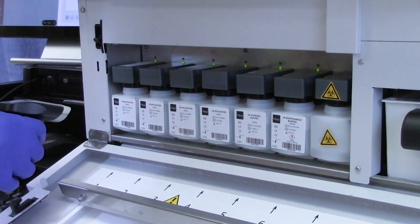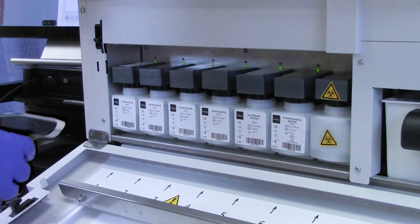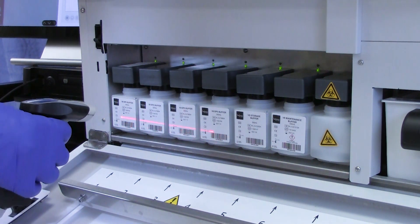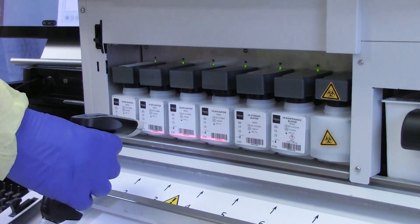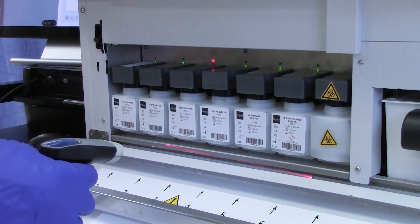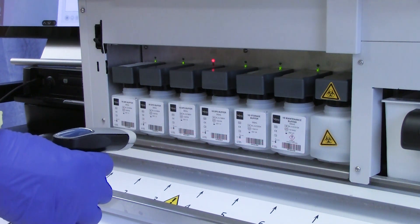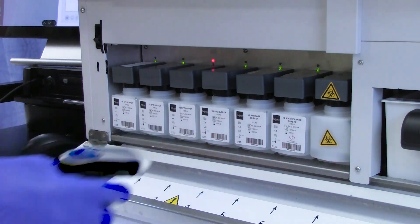All reagents and buffers for the Nexus are barcoded with lot information, expiration, and test capacities. The Nexus has six buffer positions. Two buffer positions are used for maintenance solutions. When one bottle is spent, the Nexus will automatically switch to the next bottle without any operator intervention.